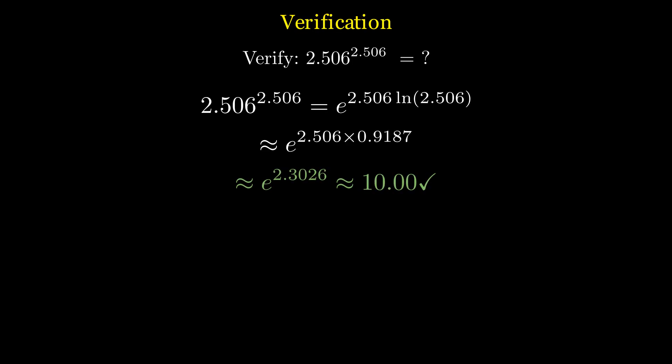Let's verify our answer. We need to check if 2.506 to the power of 2.506 equals 10. 2.506 to the power of 2.506 is e to the power of 2.506 times the natural logarithm of 2.506. This is approximately e to the power of 2.506 times 0.9187, which gives e to the power of 2.3026, or almost exactly 10. Excellent.